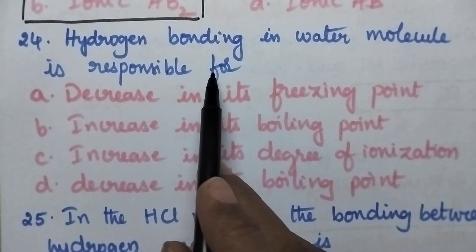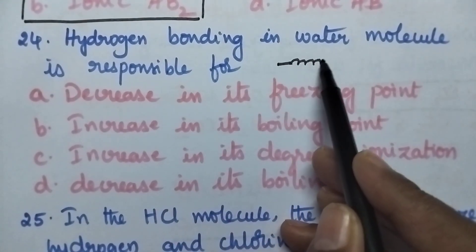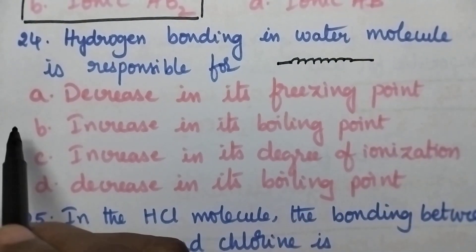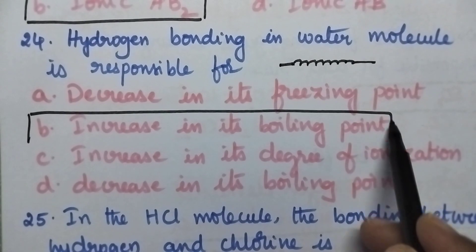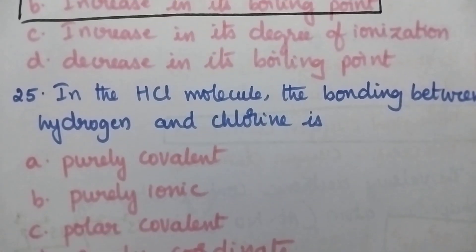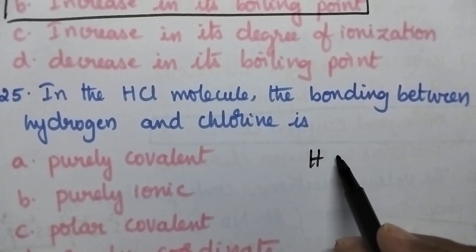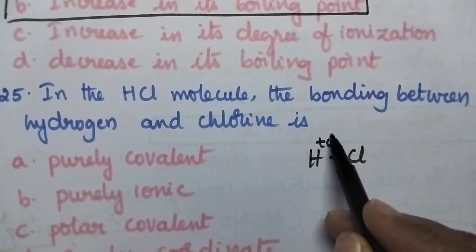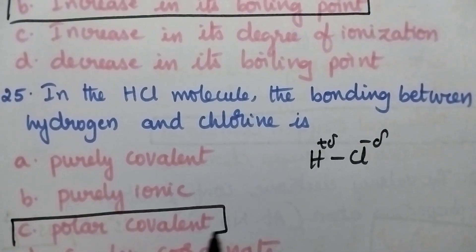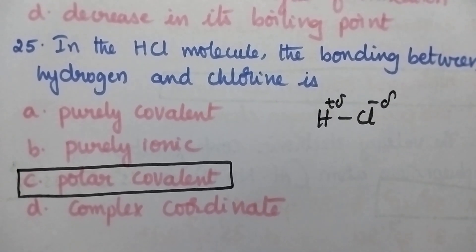Hydrogen bonding in a water molecule is responsible for association between molecules, which causes an increase in boiling point. Option B is the right answer. In the HCl molecule, the bonding between hydrogen and chlorine is a polar covalent bond, so option C is the right answer.